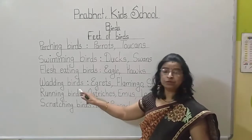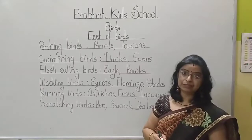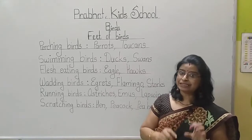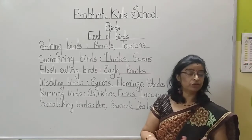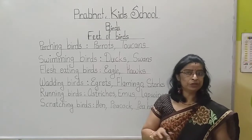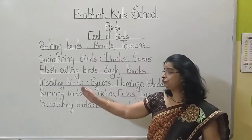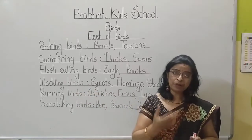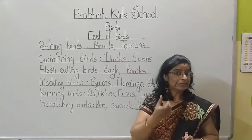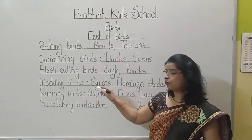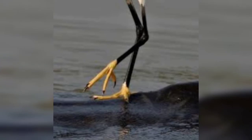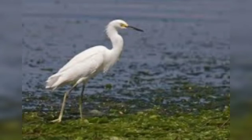Then another type is wading birds. Some birds search for their food — small fish and tiny insects — whatever is found in the water. These birds have long slender legs with long toes, and their legs enable them to wade and move on soft and wet land.